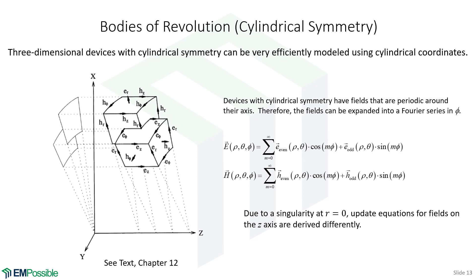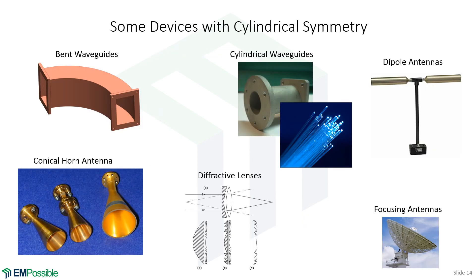Then there are bodies of revolution. This is very commonly used — sometimes we have devices that have some kind of rotational symmetry, so we can develop our codes in cylindrical coordinates, which is hugely efficient. Example devices include waveguide bends, cylindrical metallic waveguides, optical fibers, dipole antennas, circular horn antennas, lenses, and parabolic dishes — all of which have cylindrical symmetry. There is a lot that can benefit from developing your simulation in cylindrical coordinates.